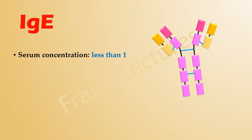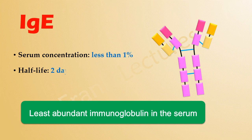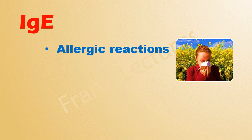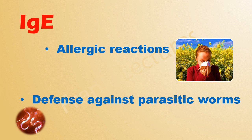It has a half-life of two days. IgE does not participate in complement fixation or opsonization. But it is a very crucial antibody because it plays an important role in allergic reactions, and it is also important in defense against parasitic worms.